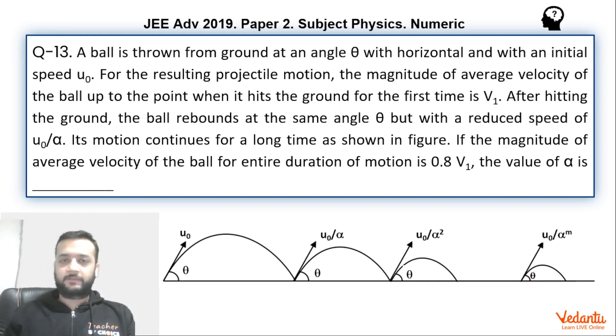Most of the students would have done this question quite comfortably. So let's see what's happening over here. A ball has been thrown at an initial speed of u₀ at an angle of θ and it keeps on bouncing for large number of times. It has been given that for the first projectile motion, that means from here till here, the average speed is v₁.